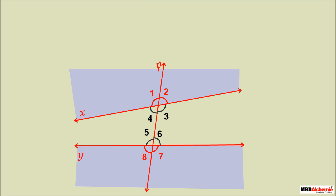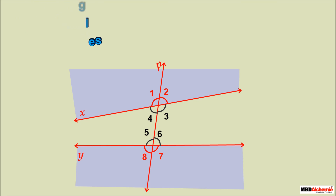The pairs of angles 4 and 5, and 3 and 6, lie in the interior part of the straight lines as well as on the same side of the transversal line. These are called pairs of interior angles on the same side of the transversal.